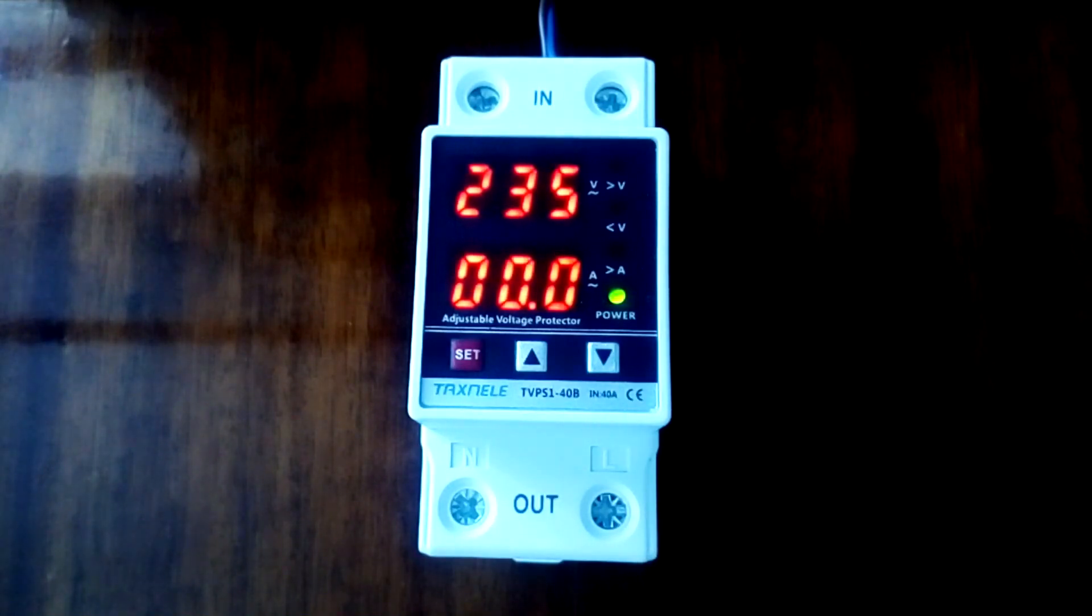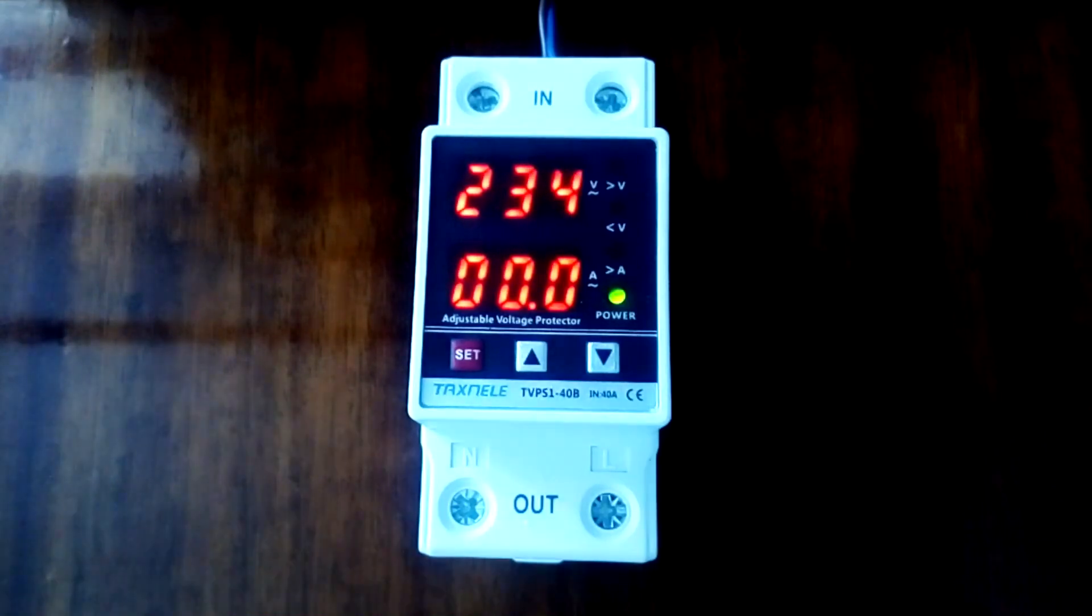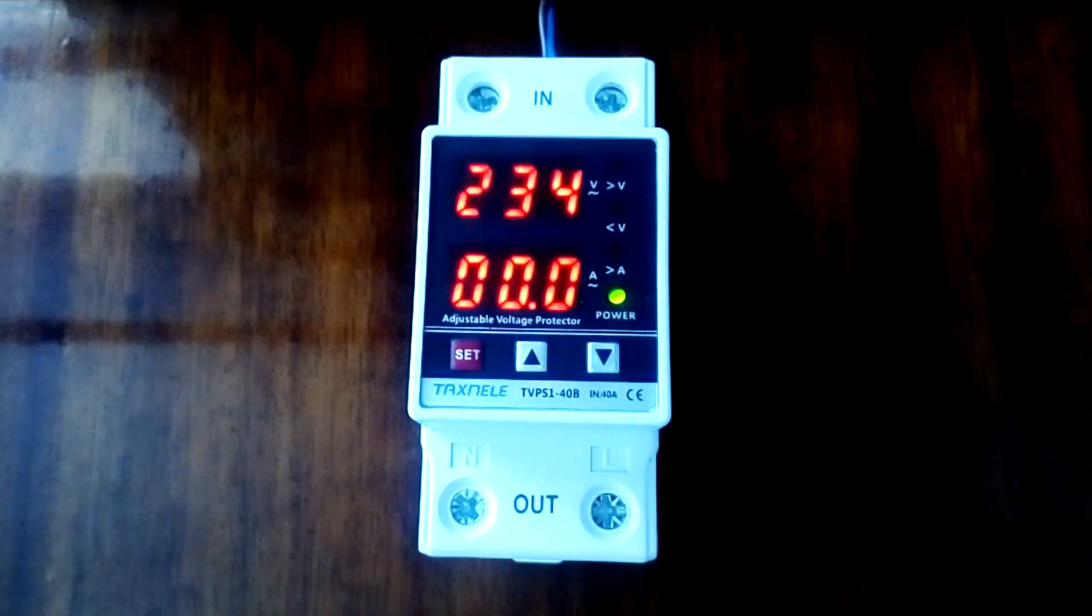Most household electrical appliances are designed to operate at a certain mains voltage. Operating these devices when the mains voltage is outside the permissible limits can lead to their failure. The main purpose of a voltage relay is to disconnect consumers from the network when the voltage goes beyond these values. After the voltage is turned off, the relay continues to control the line. When the voltage is restored, after a certain time the relay will turn on the load again.